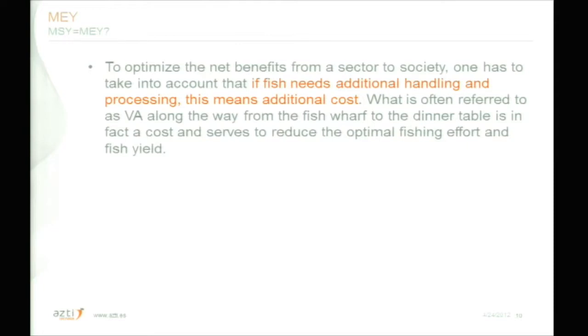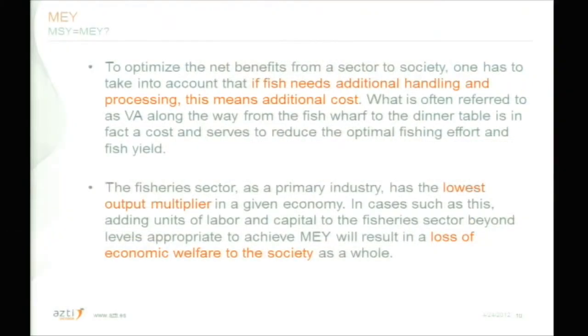The first critique is that to optimize the net benefits from a sector to society, one has to take into account that if fish needs additional handling and processing, this means additional costs. What is often referred to as value added along the way from the fish wharf to the dinner table is in fact a cost and serves to reduce the optimal fishing effort. The second critique is that the fishery sector as a primary industry has the lowest output multiplier in a given economy, and adding units of labour and capital beyond levels appropriate to achieve MEY will result in a loss of economic welfare to society as a whole.